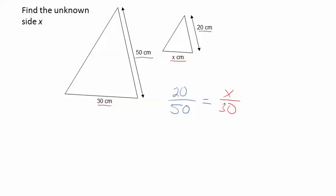So now we can go ahead and either multiply both sides by 30 and both sides by 50, or we can use cross-multiplication. So we can say 50 times X,